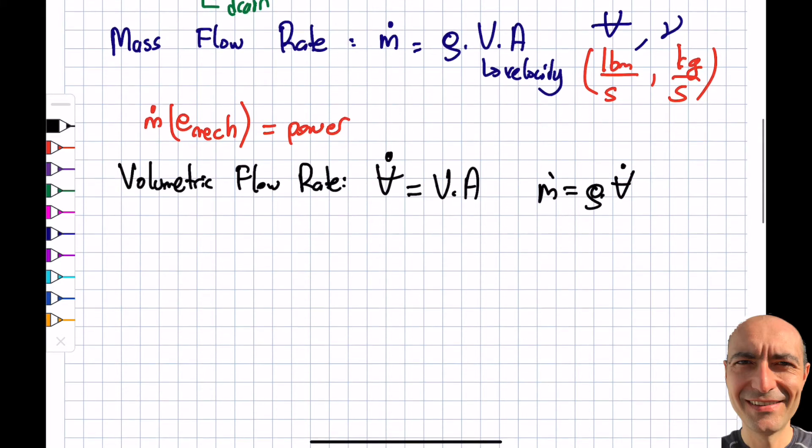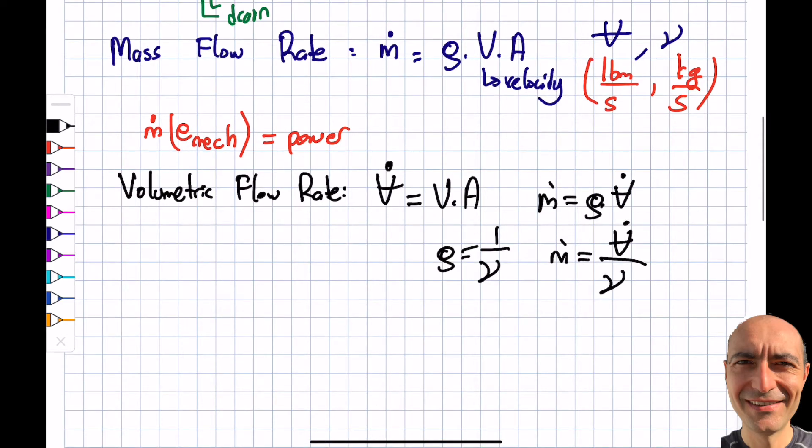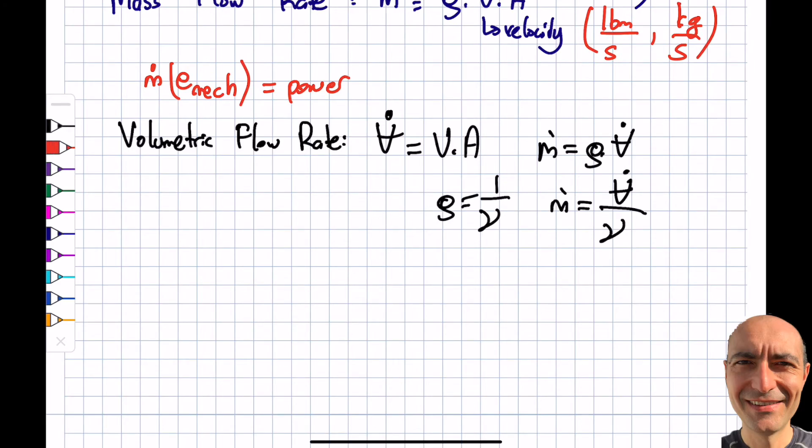You can clearly see that V times A multiplied by density gives mass flow rate. You remember from thermodynamics we use specific volume more commonly than density, so I can simply write m dot equals V dot (volumetric flow rate) divided by the specific volume v.